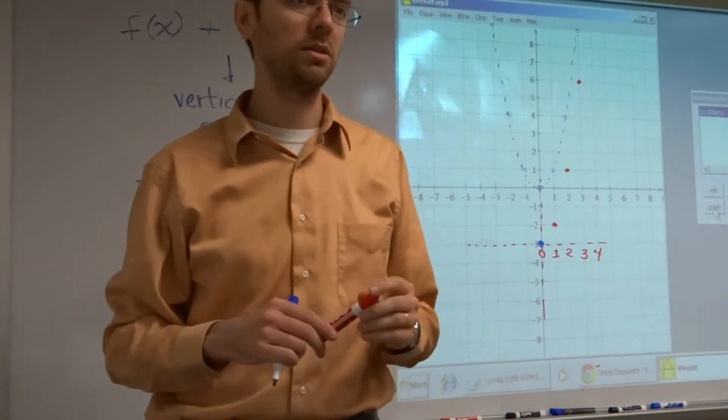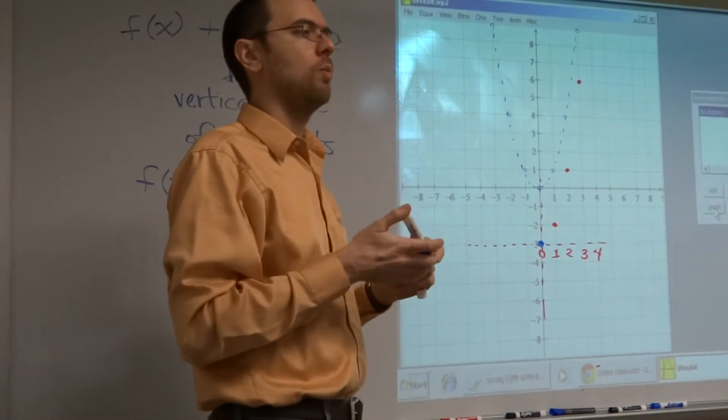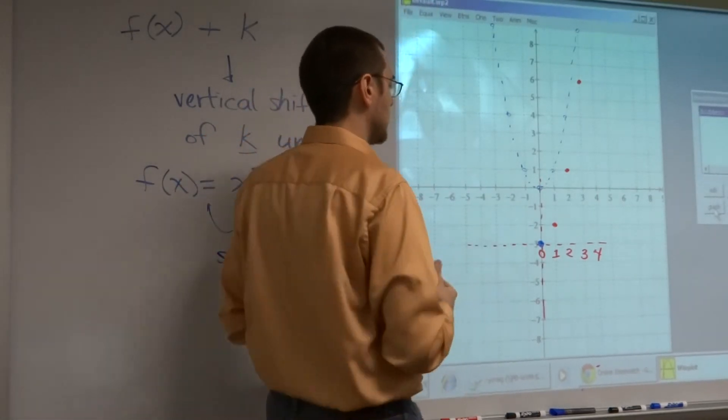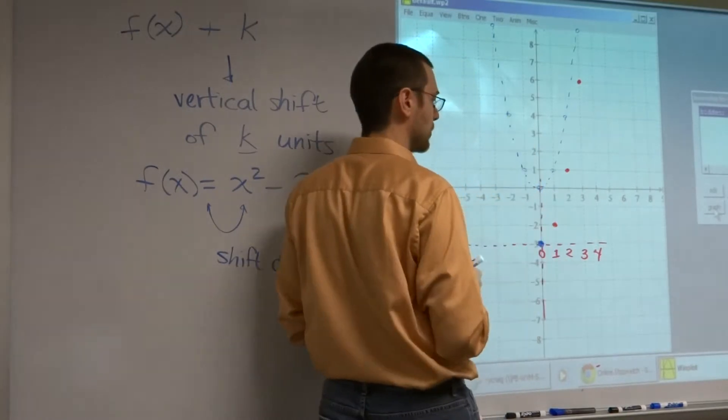So, everything's been shifted down 3, right? So, a way to help me do that without having to worry about where are the original points and how do I need to go down 3 units, I can draw this new set of axes and base it off of this new origin, so to speak.